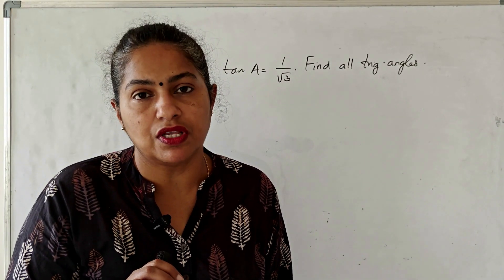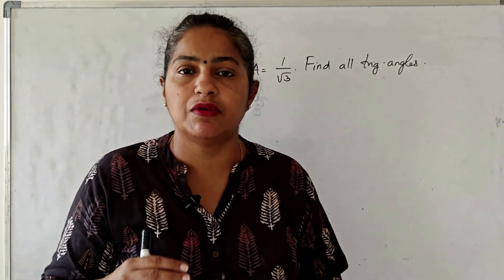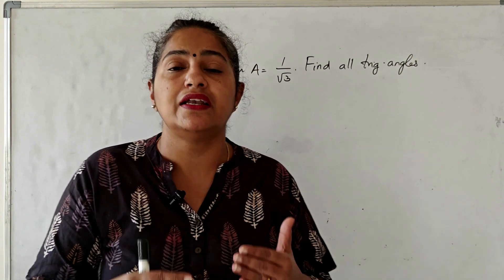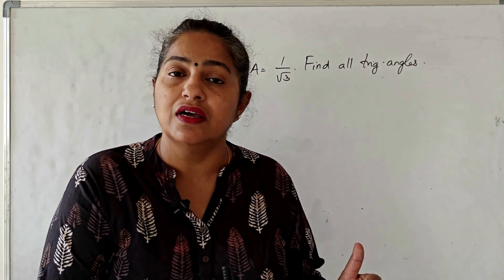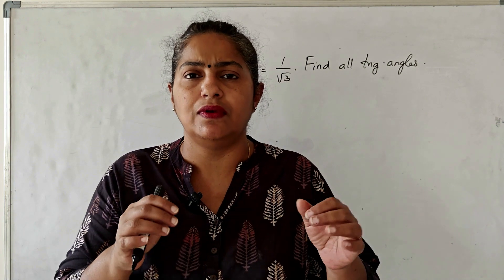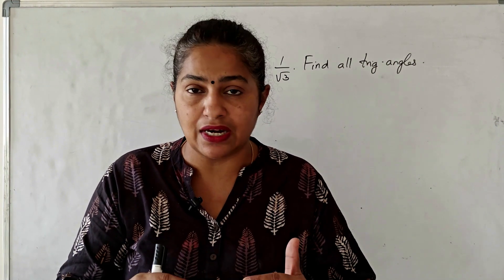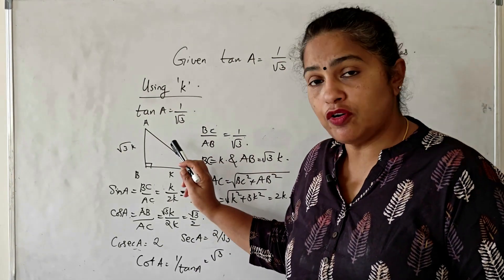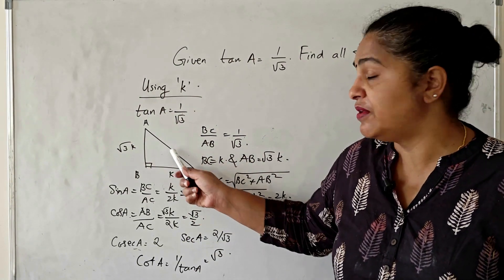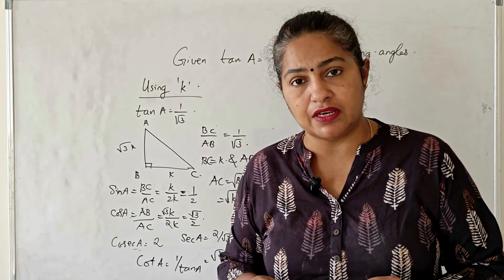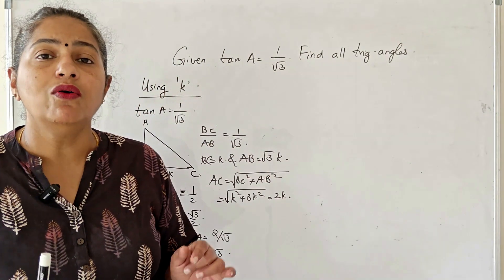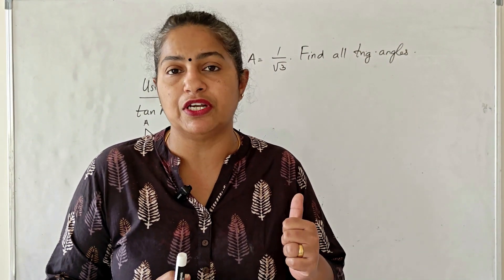Given tan a = 1/√3, we need to find all the trigonometric ratios. We have done similar sums before when dealing with the basics — we took the sides as k and k√3, used Pythagoras theorem, and found the trigonometric ratios. Now we are going to use identities in order to find the values of all the ratios.